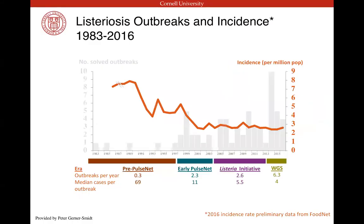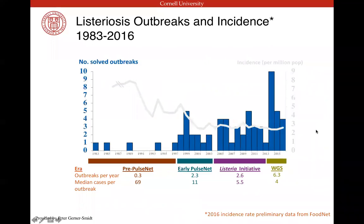In terms of what Listeriosis has looked like over the last few years, I've got a graph showing that the incidence has actually gone down over time. You can see it's actually plateaued in the last 20 years or so — that's the orange line. But in blue, you can see the number of solved outbreaks. As our public health agencies get better and technologies develop, despite there being a plateau in the incidence of Listeria, there's been a rapid increase in the number of outbreaks they've been able to solve.